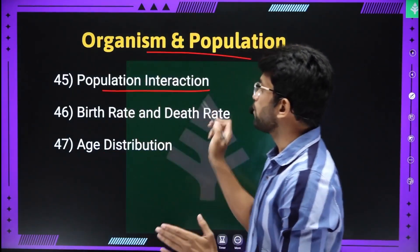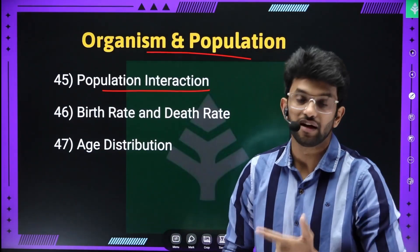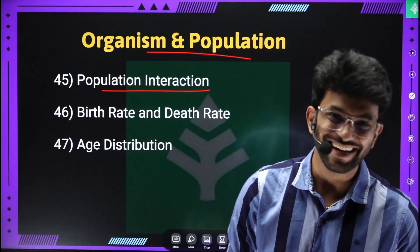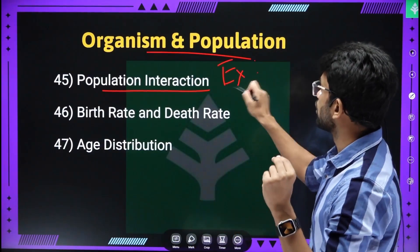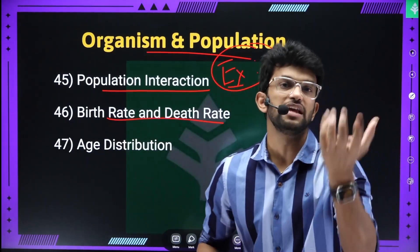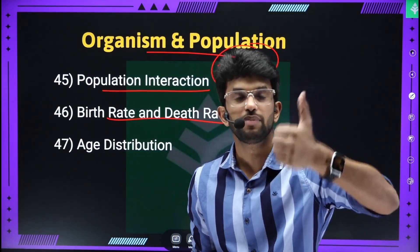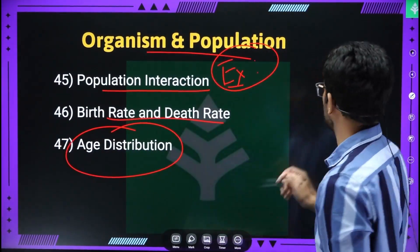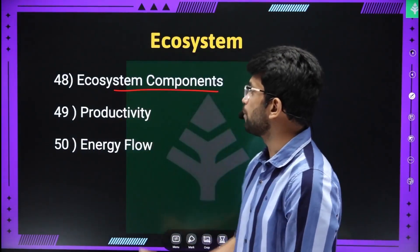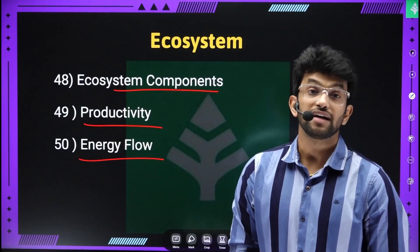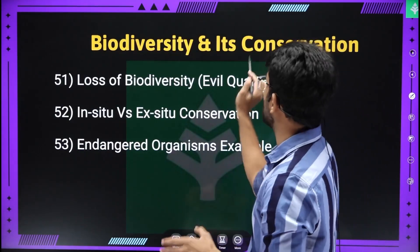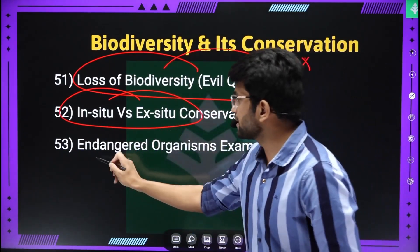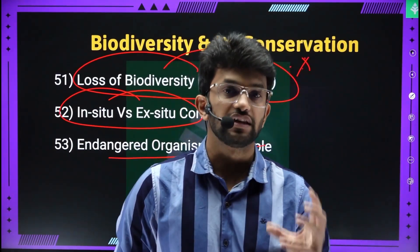Organisms and population: population interactions — mutualism, commensalism, predation — examples are very important. Birth rate and death rate — how much does population increase? Birth rate increase, immigration increase, death increase, emigration increase. Age distribution — pyramid of age — this is very important, direct exam question. Ecosystem components, productivity, and energy flow — direct question in exam. Last topic: biodiversity conservation — in-situ and ex-situ. Biodiversity loss, evil quartet, and endangered organisms with examples such as Mauritius Dodo.